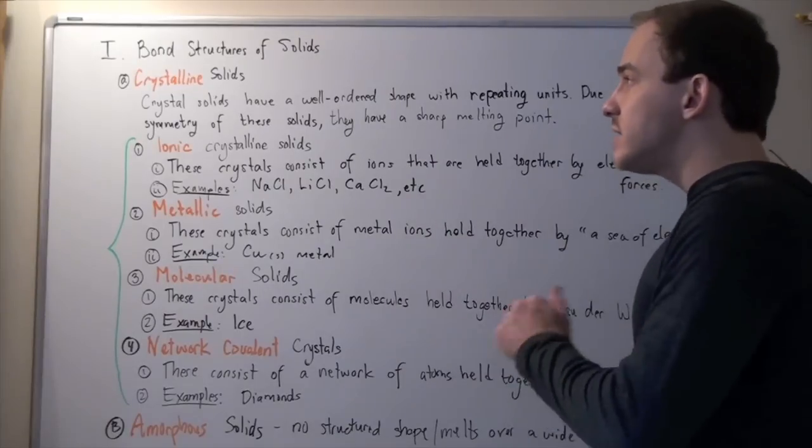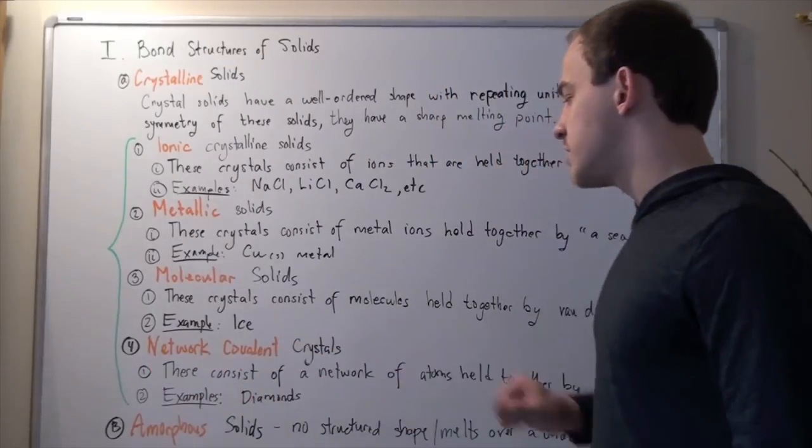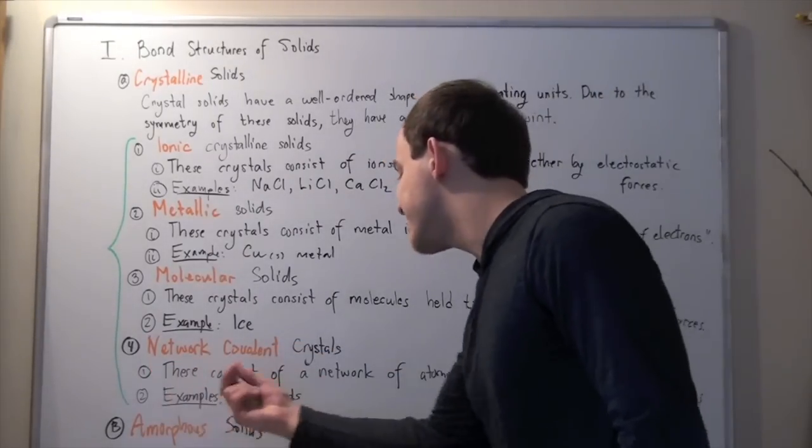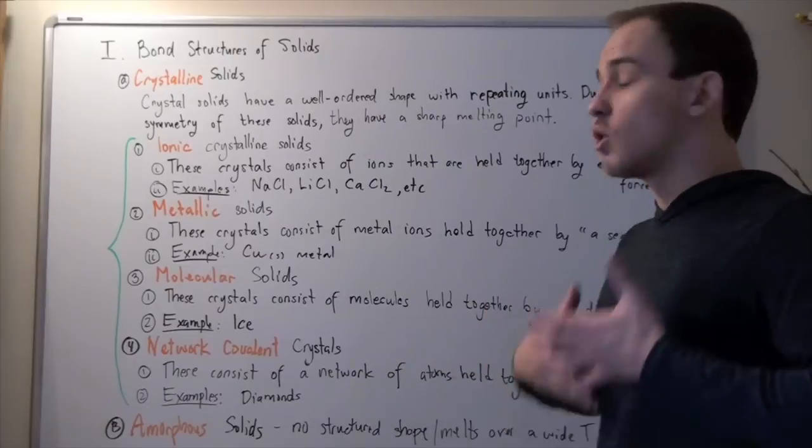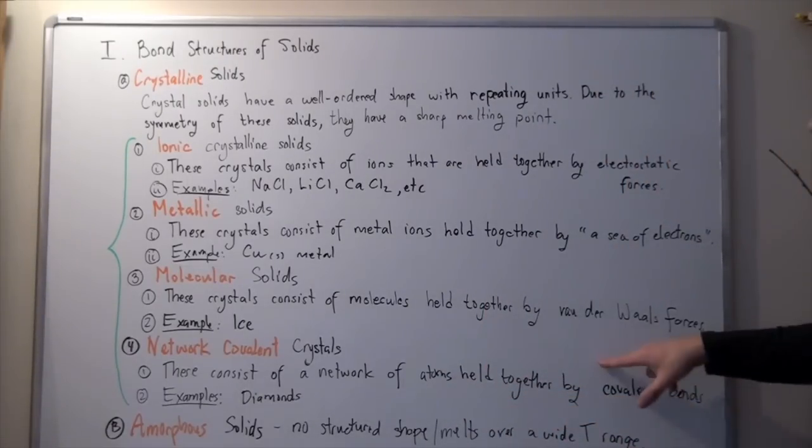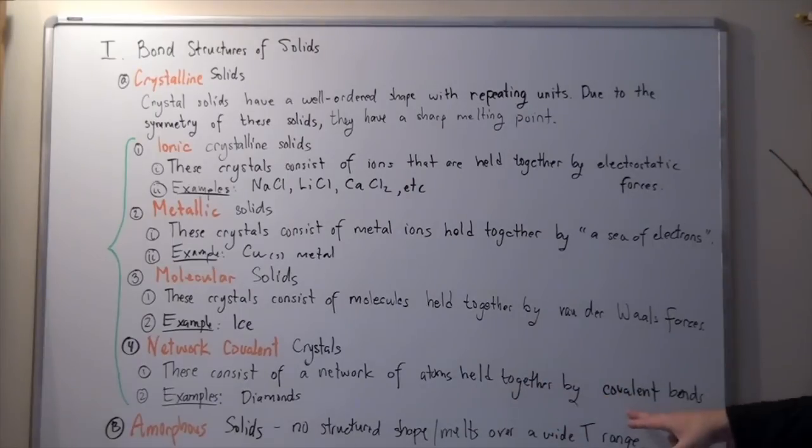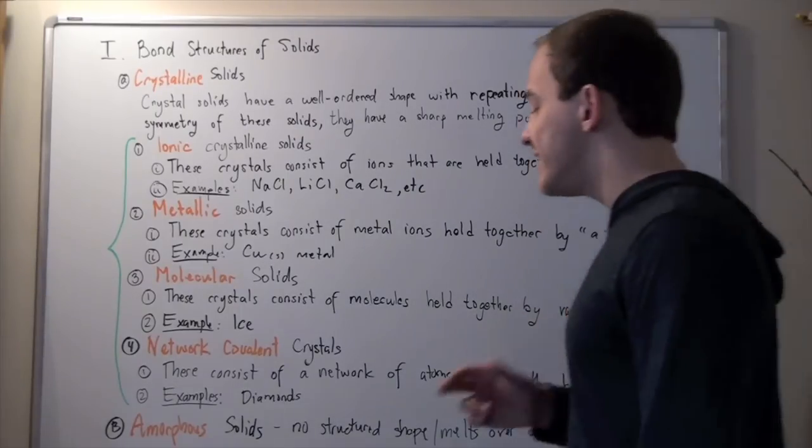The fourth and final type of crystalline solids are network covalent crystals. These consist of a network of atoms or molecules held together by covalent bonds. These covalent bonds can be both non-polar and polar covalent. An example is diamond.